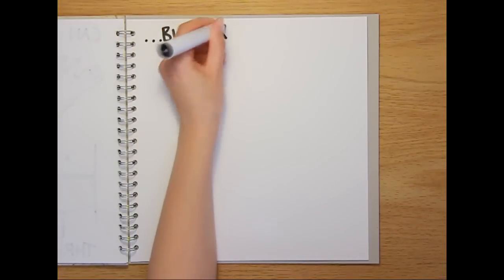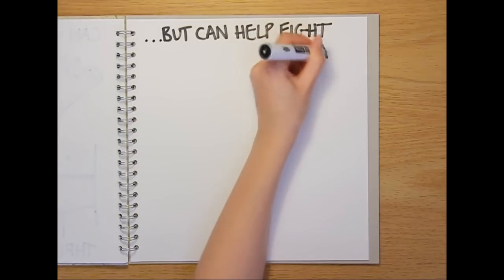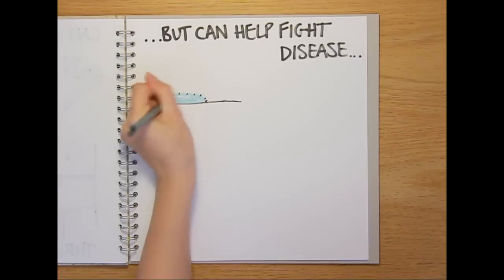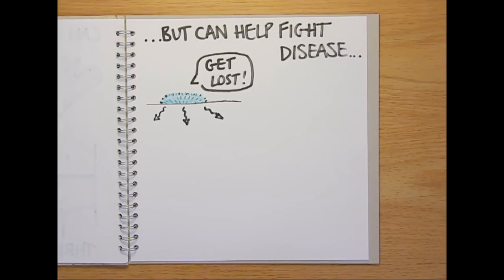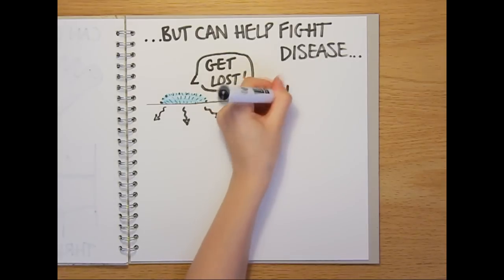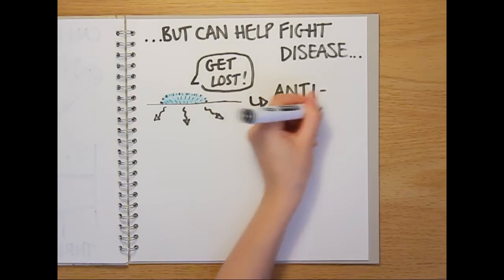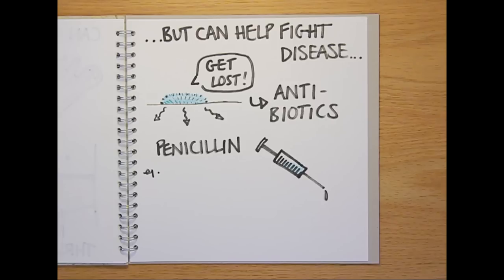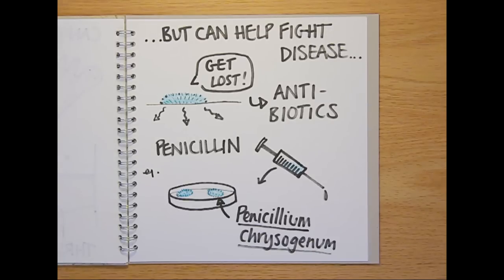But they can also provide us with ways of fighting disease. In order to stop bacteria and other fungi from invading their patch, many fungi produce chemicals that can stop other microorganisms in their tracks. And it was by isolating these chemicals that we developed some of our most important antibiotics. Perhaps the most famous fungi-derived drug, penicillin, was developed from Penicillium chrysogenum, that's very closely related to the Penicillium fungi we met earlier used to make blue cheese.